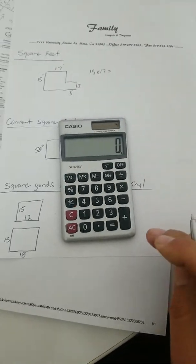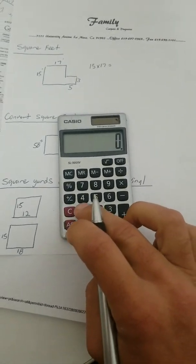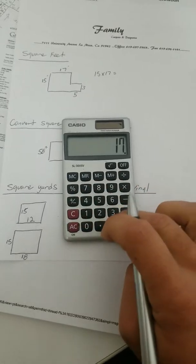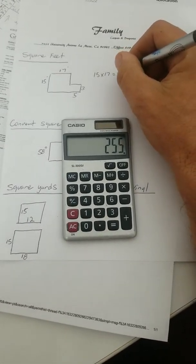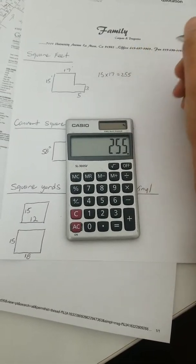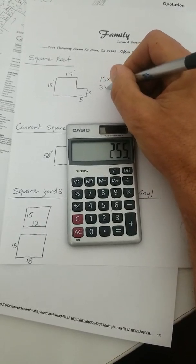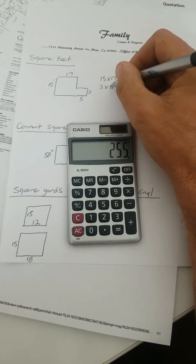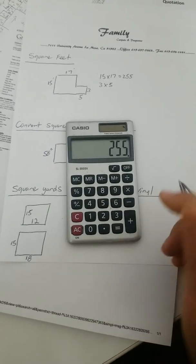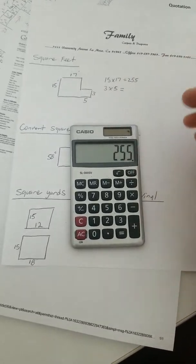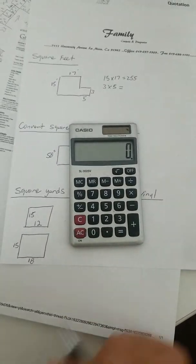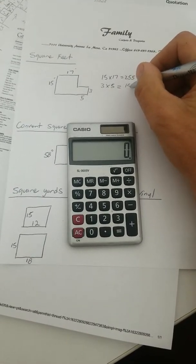So, all you have to do, this is the easiest calculation, is do 15 times 17 and that's your square foot for that area. So, then we're going to take the 3 times the 5 over here because we've got to add up all this square footage. And what does that equal? Well, I don't think you need a calculator for that. That equals 15 square feet.